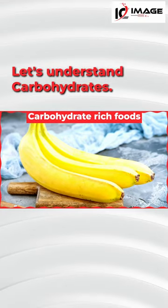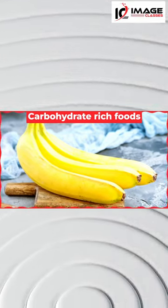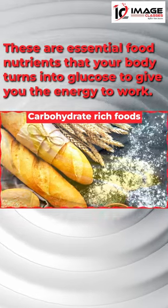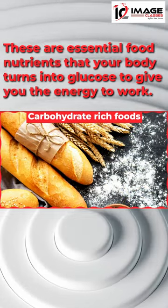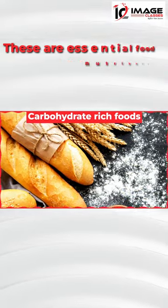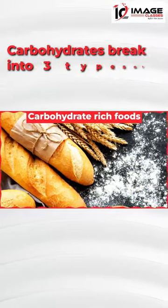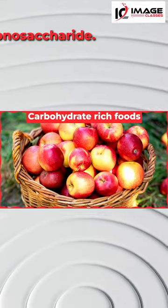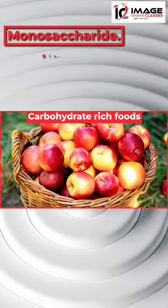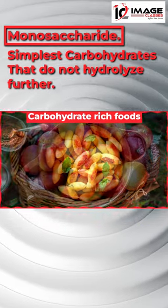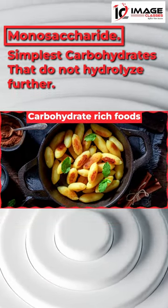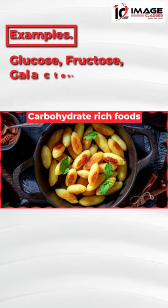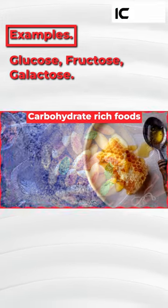Let's understand carbohydrates. These are essential food nutrients that your body turns into glucose to give you the energy to work. Carbohydrates break into three types. First, monosaccharides — the simplest carbohydrates that do not hydrolyze further. Examples: glucose, fructose, galactose.